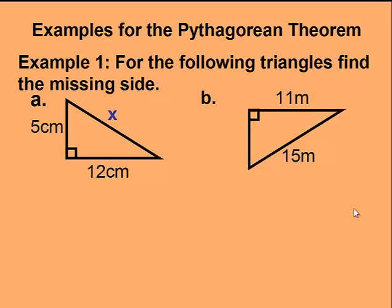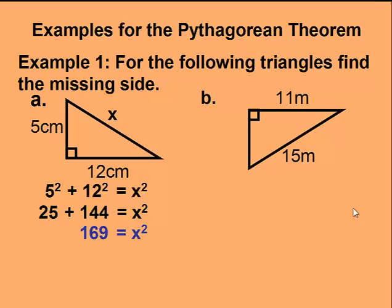So we'll set up our equation, 5 squared plus 12 squared equals the hypotenuse squared, in this case x. We multiply out the numbers, 5 squared is 25, 12 squared is 144. Add our two values, we get 169, which equals x squared.